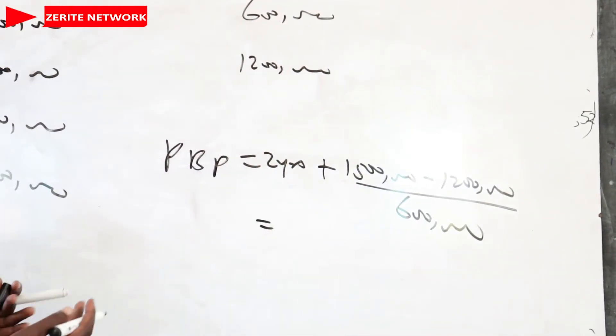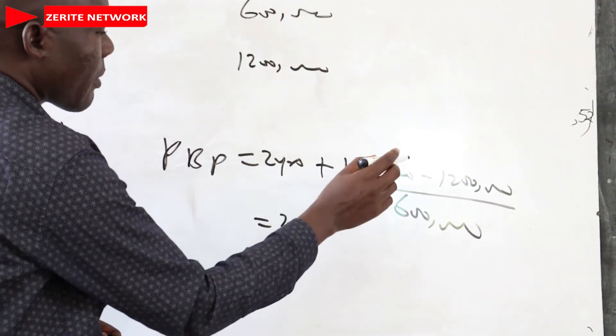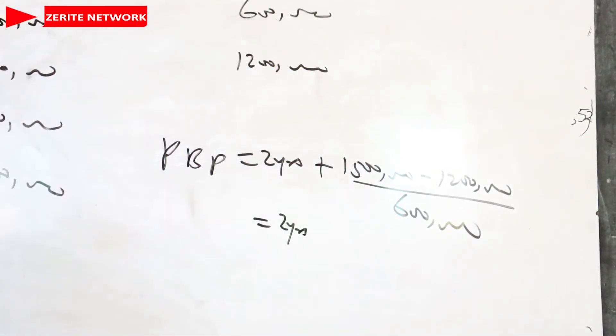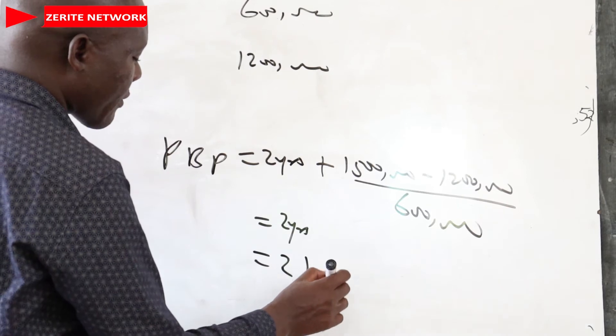So this one will be two years, then $1,500,000 minus $1,200,000, you will remain with $300,000. So $300,000 over $600,000, that is like a half. So the final answer will be two and a half years.